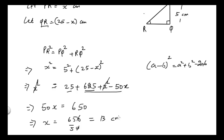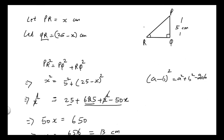So X equals 650 divided by 50, which gives 13 centimeters. Therefore PR is 13 centimeters and QR is 25 minus 13, which is 12 centimeters. Now we have all the side lengths of triangle PQR.